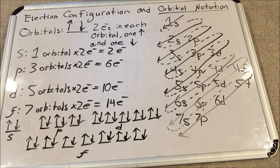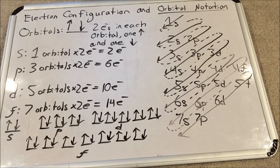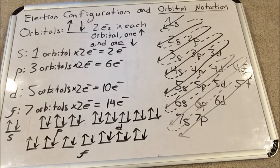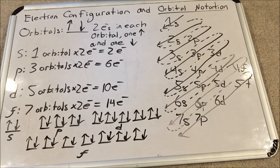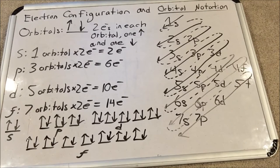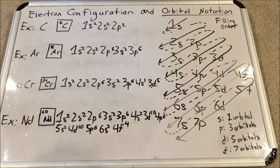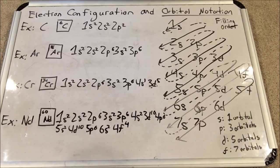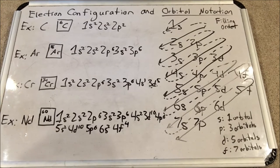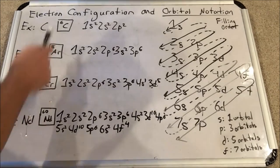So I'm going to show you a few elements now and their electron configurations and we're going to create the orbital notation next to them. Here are the four examples for which we are going to make orbital notations. Let's start with a simple one: carbon. Carbon has six electrons according to its atomic number.